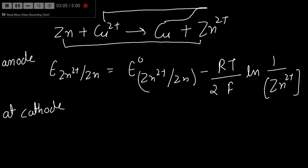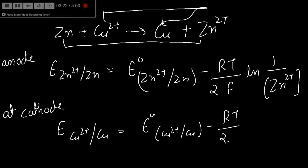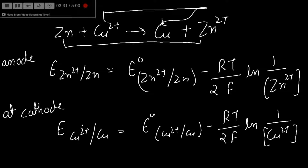At the cathode, the reaction is Cu²⁺ being reduced to Cu. So the electrode potential is: E(Cu²⁺/Cu) = E°(Cu²⁺/Cu) minus (RT / 2F) times ln(1 / [Cu²⁺]). This gives us equation two for the cathode.